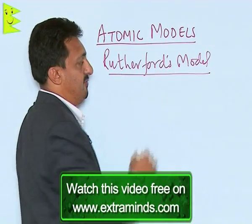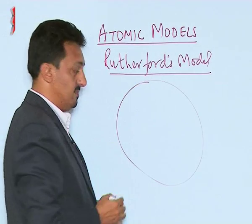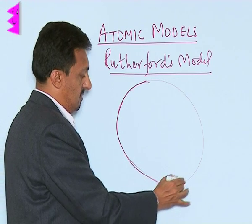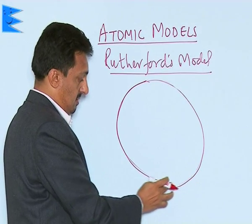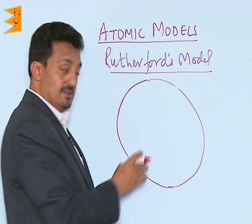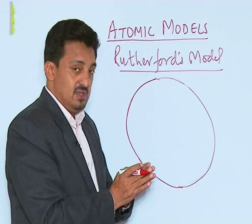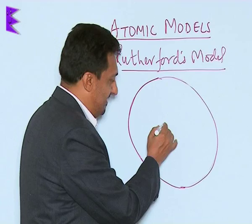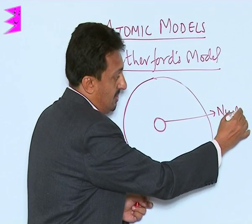In Rutherford's model of atom, he assumed that atoms are spherical in shape. He said that the whole mass of the atom along with all the positive charge is concentrated in a very, very small space lying at the center of the atom, which is called the nucleus.